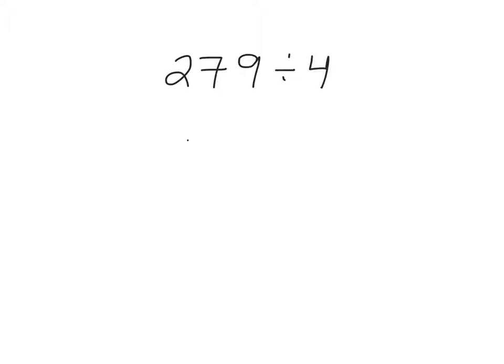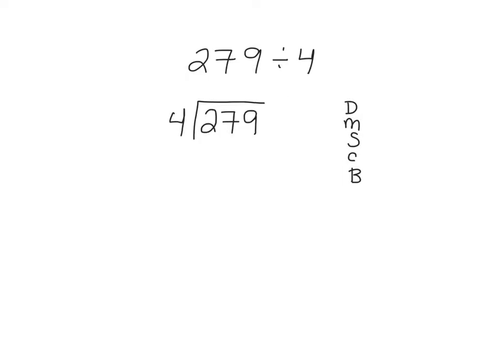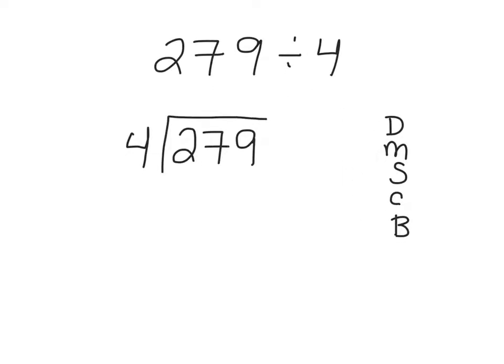So let's go ahead and set this up. First things first, we have the dividend which lives inside the den and the divisor which lives outside. And because we don't want to forget our DMSCB - Divide, Multiply, Subtract, Check, Bring down - McDonald's served cheeseburgers, we're good to go. First things first, we are going to do 4 divided by 2 and that cannot be done so we have a zero. 4 is bigger than 2, so we're going to go to 27. 4 can go into 27, it can go in 6 times, and 6 times 4 is 24.